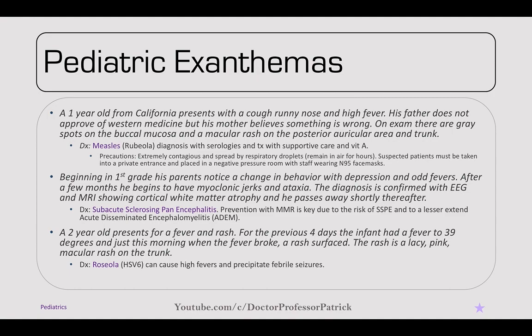A two-year-old presents with fever and rash. For the previous four days, the infant had a fever to 39 degrees, and just this morning when the fever broke, a rash surfaced. The rash is lacy pink and macular, mostly on the trunk. This is roseola, or HHV-6. It can cause very high fevers for about four days, and then when the fever breaks, the rash surfaces. This is a common precipitant of febrile seizures.